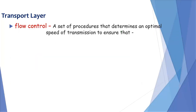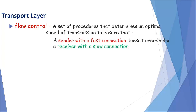The most important function of transport layer is flow control. It is a set of procedures that determines an optimal speed of transmission to ensure that a sender with a fast connection does not overwhelm a receiver with a slow connection.